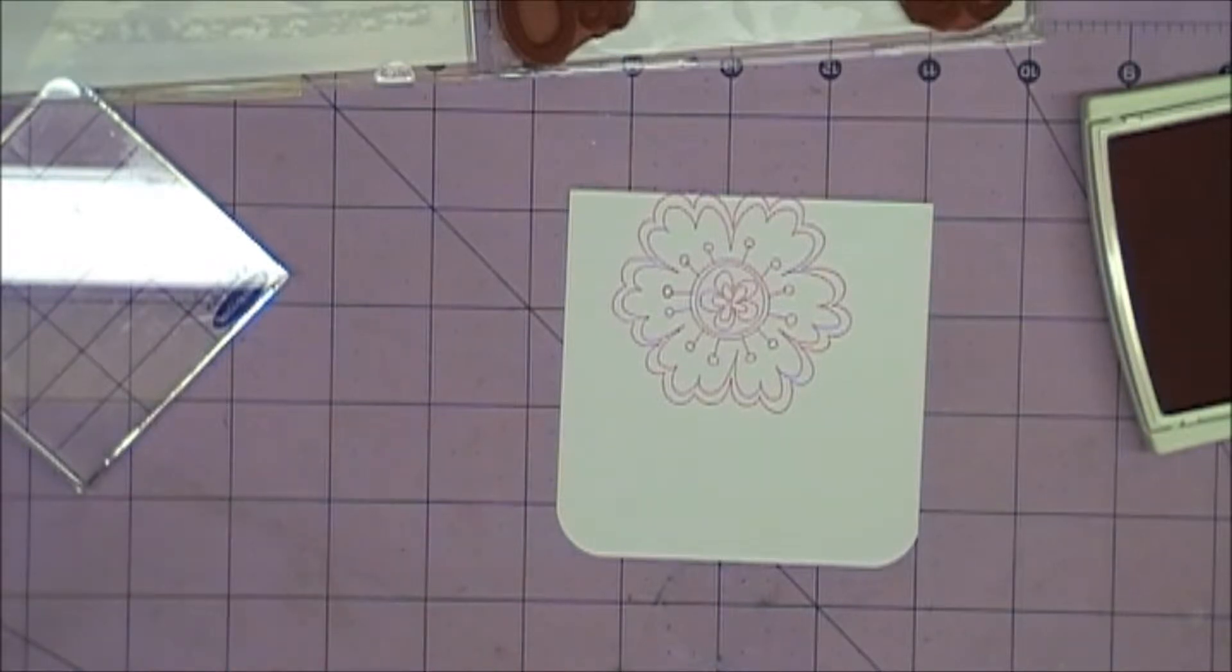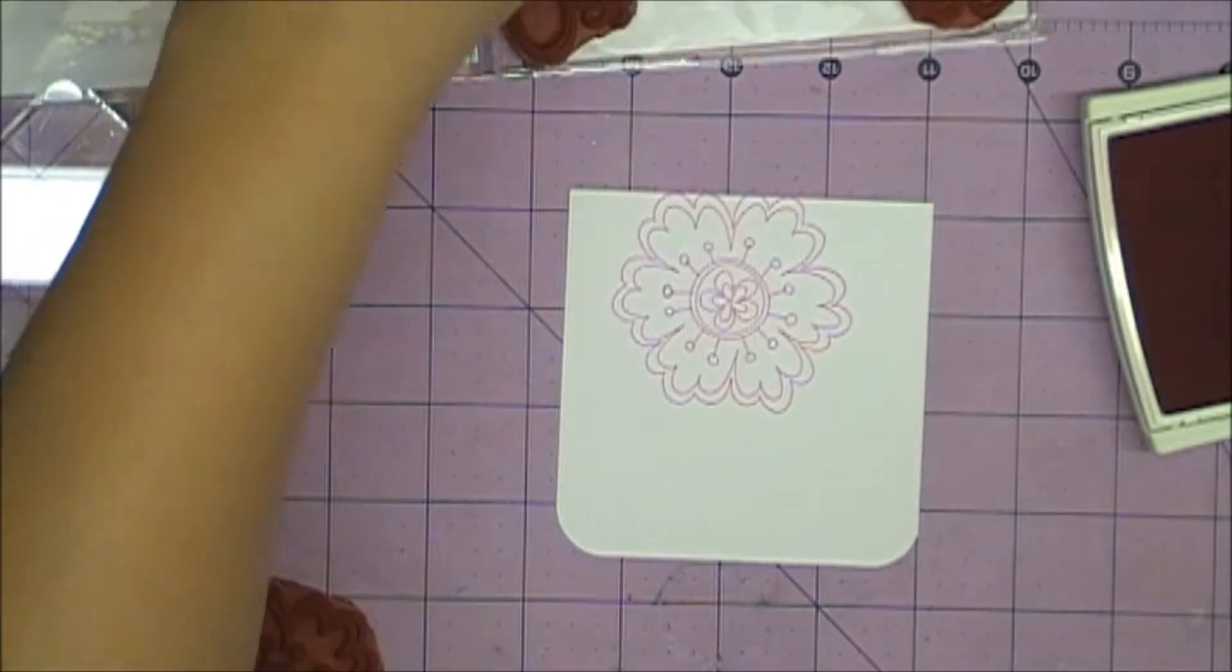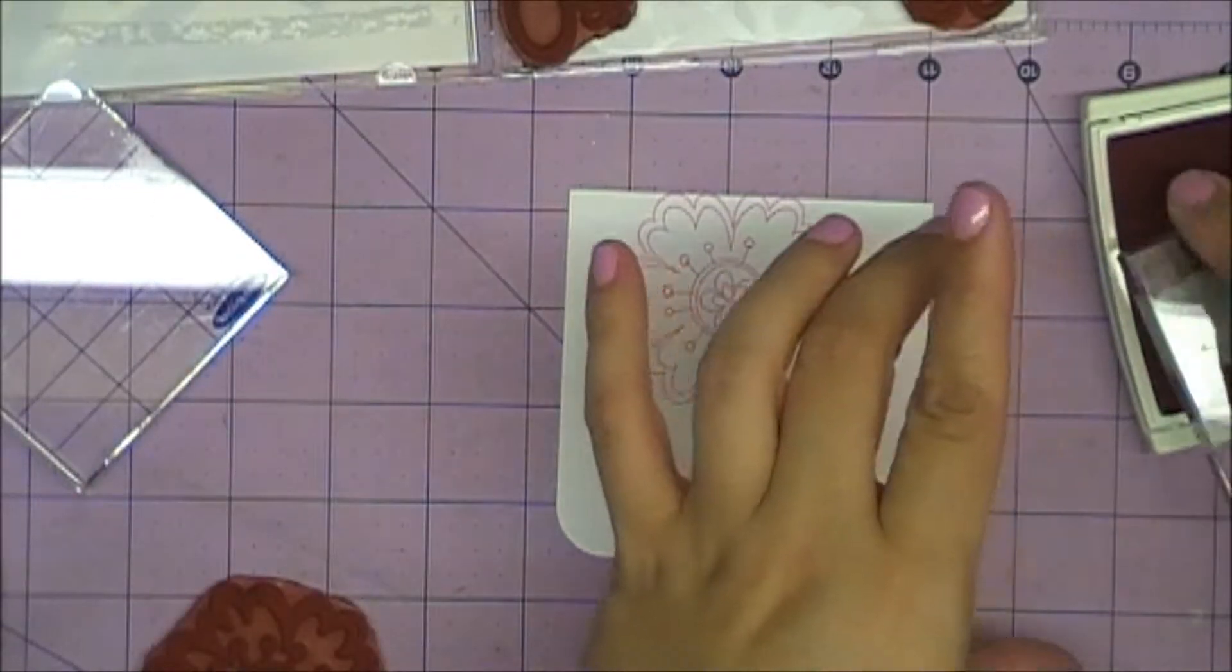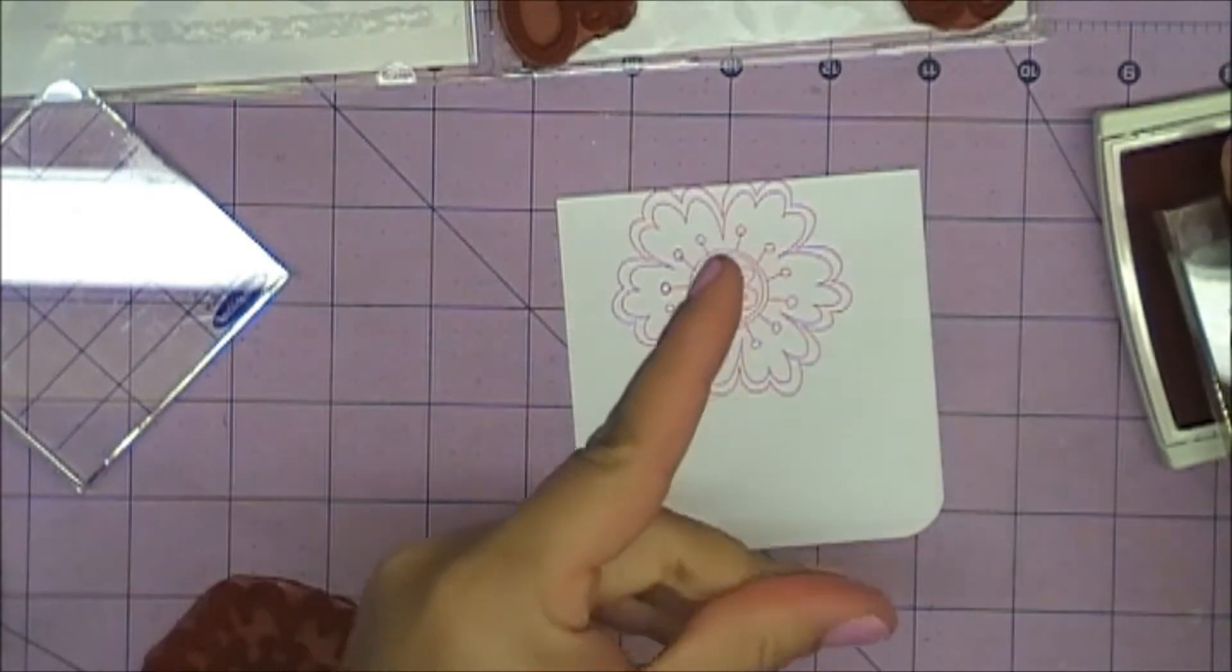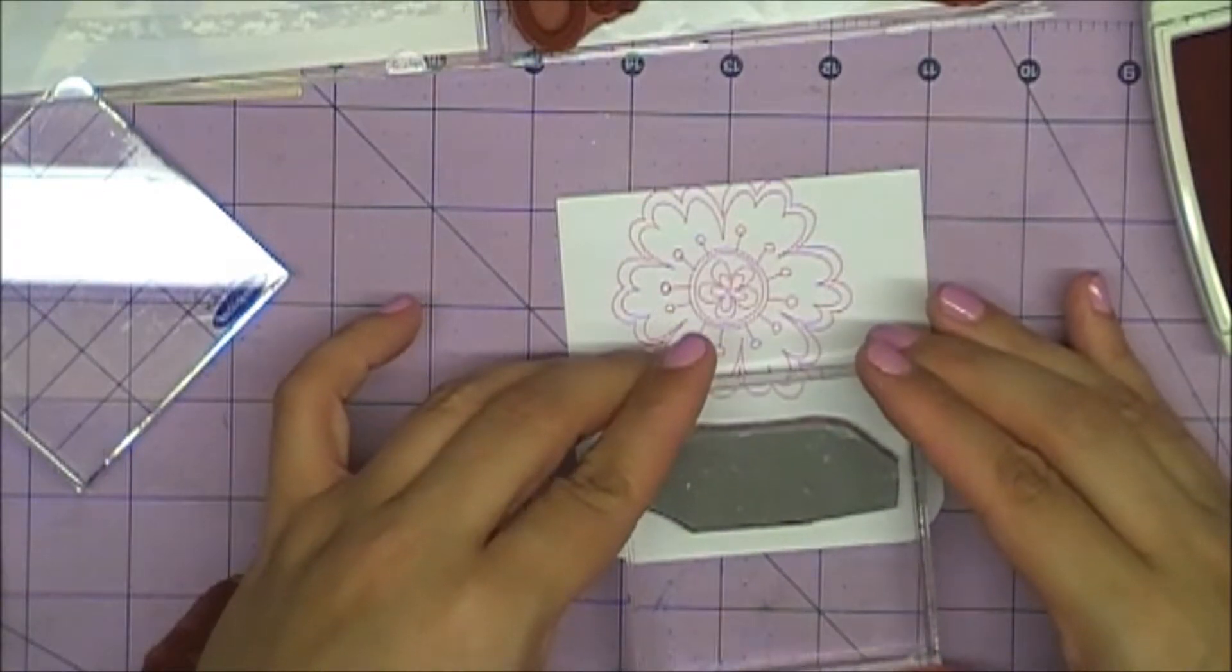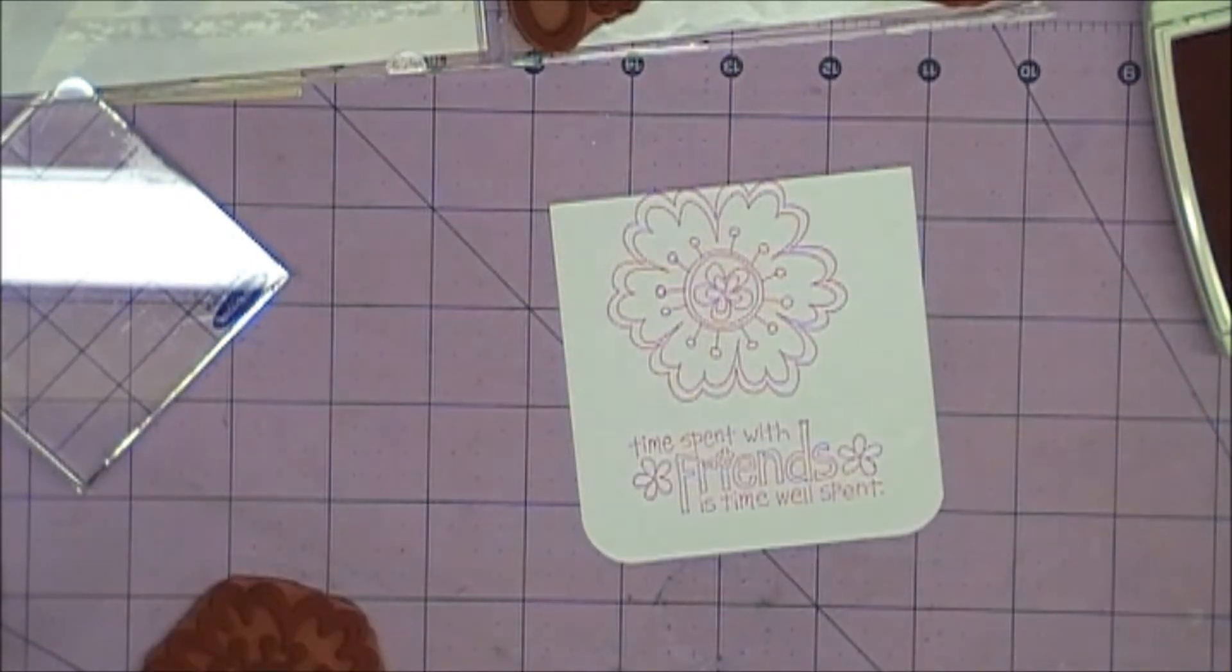It's kind of high. You'll see my other ones were a little lower. So I'm just wiping this off with a baby wipe for now. And then I have this sentiment from that same set, time spent with friends is time well spent. Just ink that up with the same color. And I'll just go a little lower right there. Beautiful!